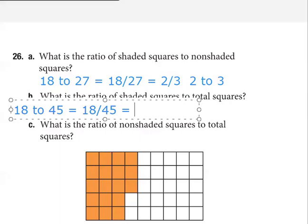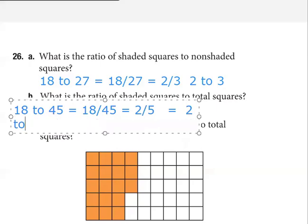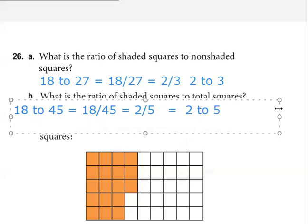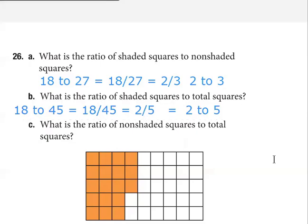Two-fifths. 9 into 18 goes two times, 9 into 45 goes five times, so we get two-fifths. And so 2 over 5 is just the ratio 2 to 5. Last one: What is the ratio of non-shaded squares to total squares?